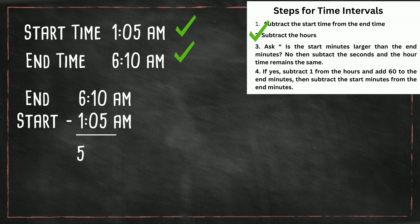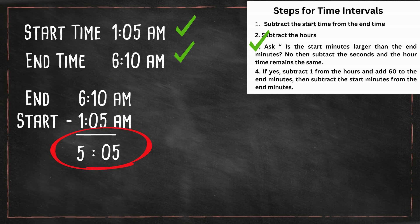Now we're going to ask ourselves: is the start minutes larger than the end minutes? In this case, no. So we subtract the minutes — 10 minutes minus 5 minutes is 5 minutes. And now we're finished. So the time interval from 1:05 a.m. to 6:10 a.m. is five hours and five minutes. Notice that they are both in a.m., and you don't have to deal with moving from a.m. to p.m. The bonus challenging question — I'll show you how to do that.